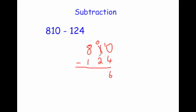10 take away 4 is 6. Now 0 take away 2 — we can't do that either, so we cross off the 8, take 1 away leaving 7, and put the 1 in front of the 0 to make 10. 10 take away 2 is 8. Then 7 take away 1 is 6. The key point is: whenever the number beneath is bigger than the one above, you need to borrow. The answer is 686.